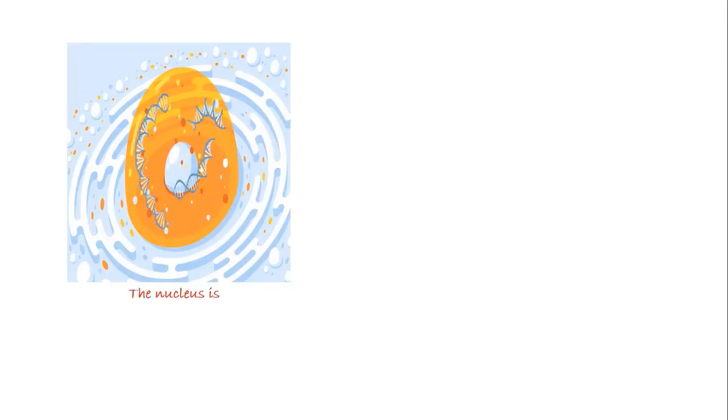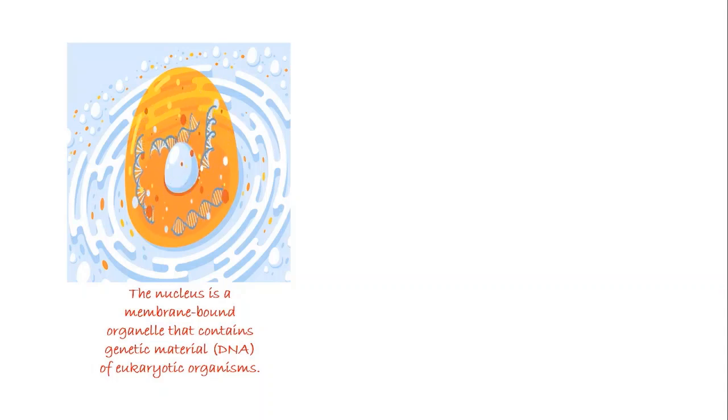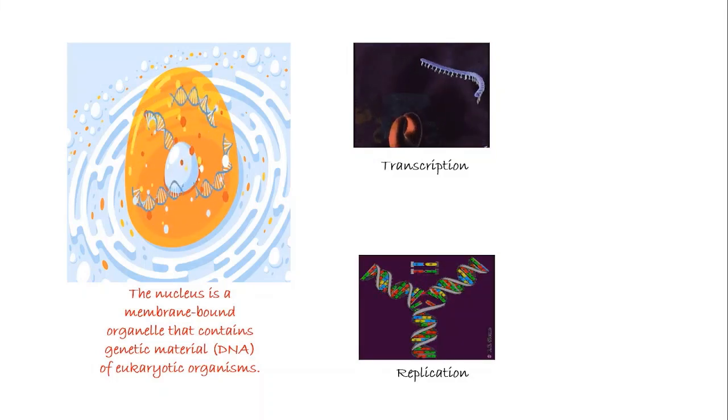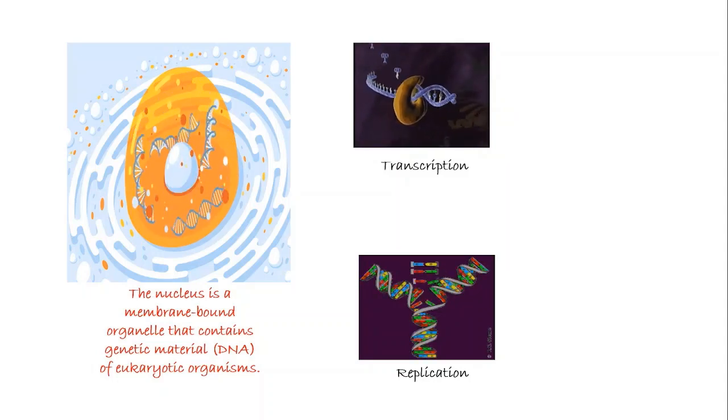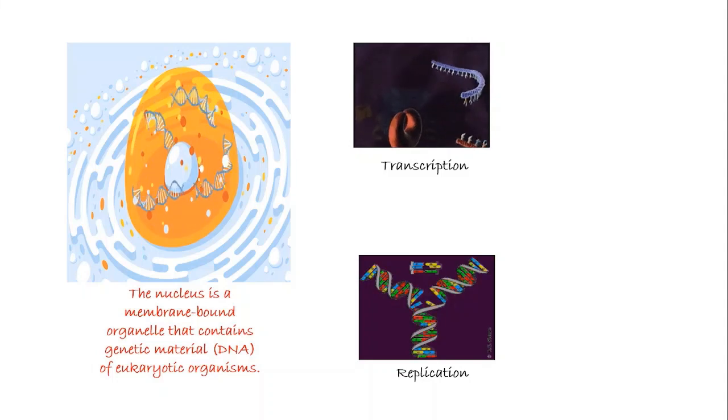The nucleus is a membrane-bound organelle that contains genetic material or DNA of eukaryotic organisms. As such, it is supposed to maintain the integrity of the cell by facilitating transcription and replication process. It is the largest organelle inside the cell taking up about a tenth of the entire cell volume. This makes it one of the easiest organelles to identify under microscope.